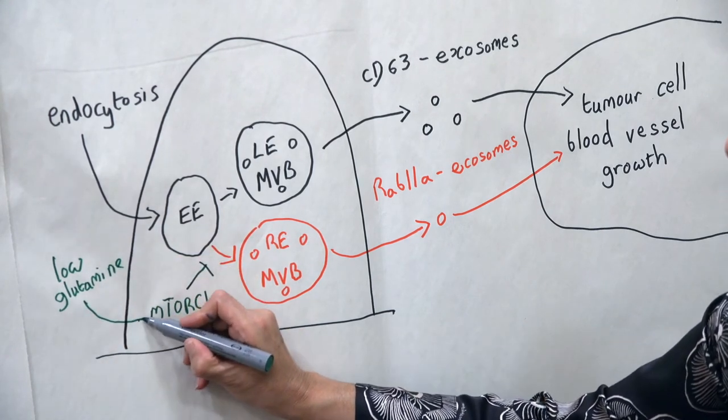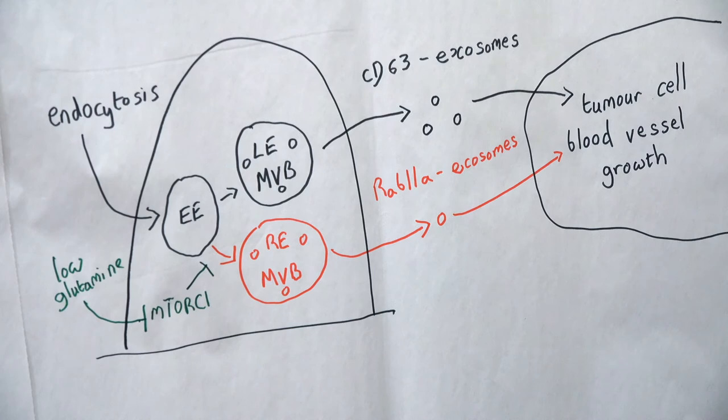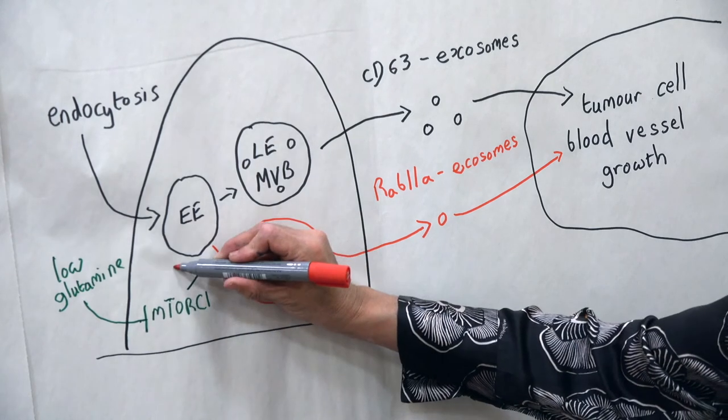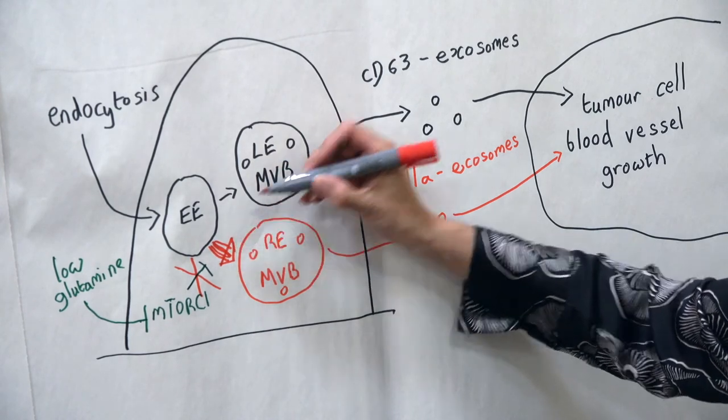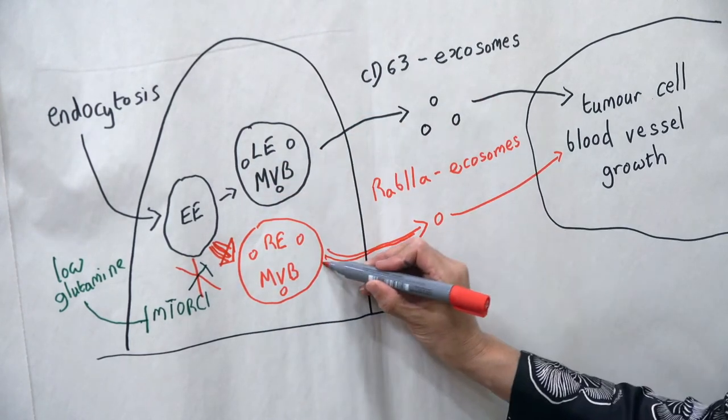So, when glutamine levels are low, as might happen in a growing tumor, mTORC1 activity is reduced, and there is a switch from classic exosomes marked by CD63 to the production of RAB11a exosomes.